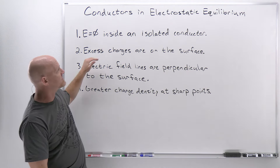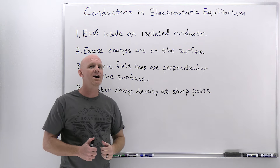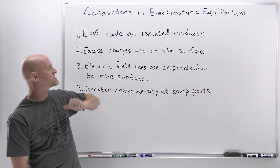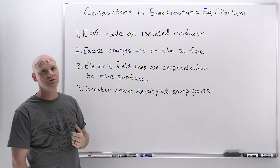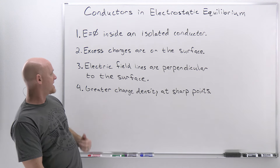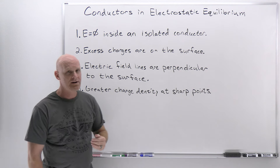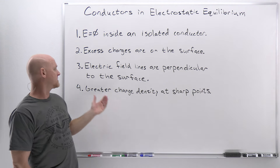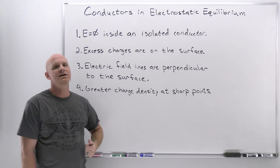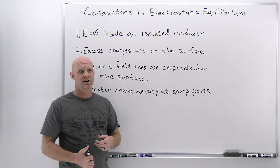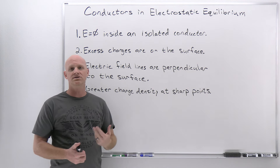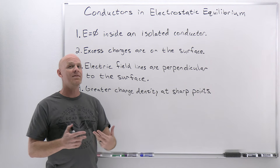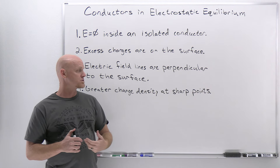The second rule is that excess charges all reside on the surface of the conductor. The third rule is that electric field lines are perpendicular to the surface, coming off that conductor. And finally, the fourth rule is that if you have an irregularly shaped conductor, you're going to get greater charge density at sharp points — where there's a smaller radius of curvature, the excess charges pool up at those points on the surface.